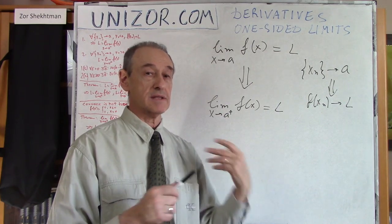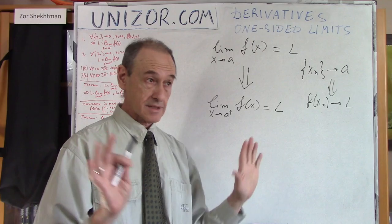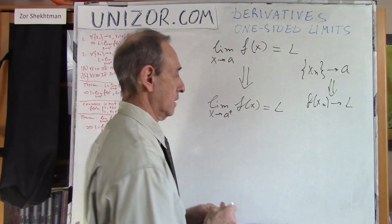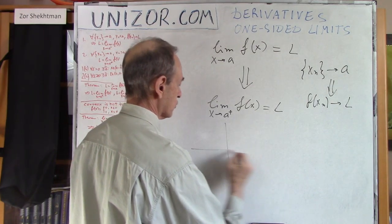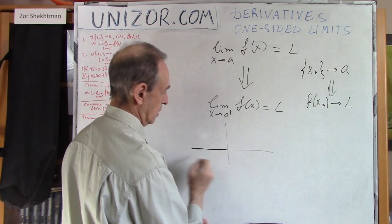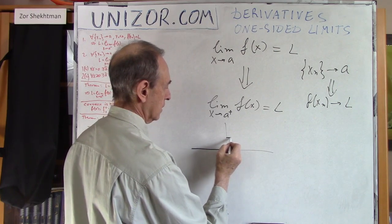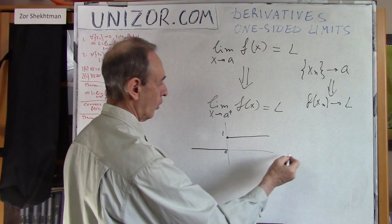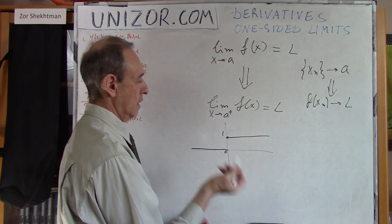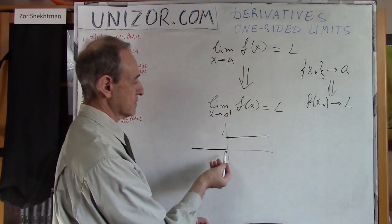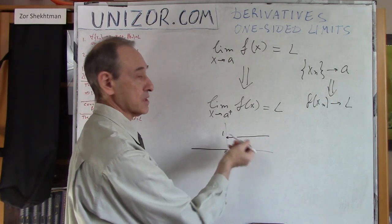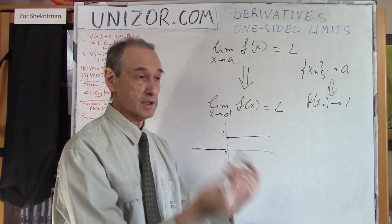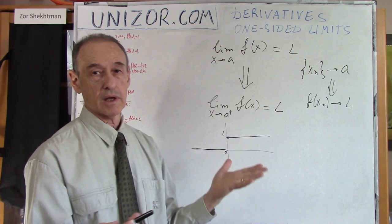Now, what about the converse? If a function has a left limit and a right limit, does it follow that it has a general limit? The answer is no. A simple counter-example: a function equal to zero for all x less than or equal to zero, and equal to one for all positive x. The left limit at zero is zero, the right limit is one, they are different, and so the function has no general limit at zero.